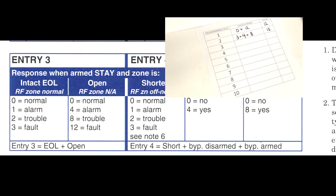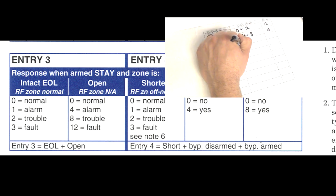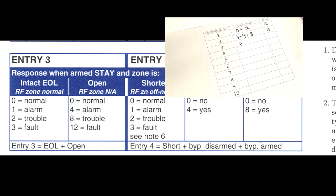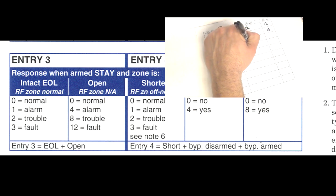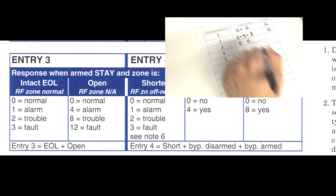Moving along to field three. Response when system is armed in stay mode and zone is intact — the zone is normal, so let's enter in a zero. Response when system is armed in stay and zone is open — if we're armed in stay and someone opens a door, that should trigger an alarm, so put in a four. Zero plus four equals four for field three.